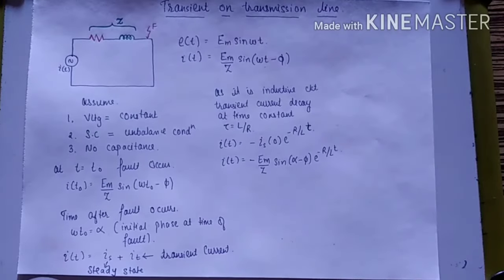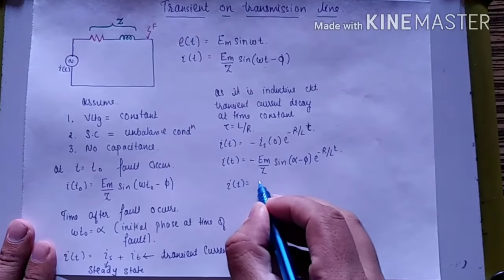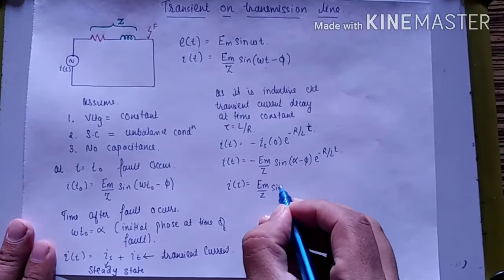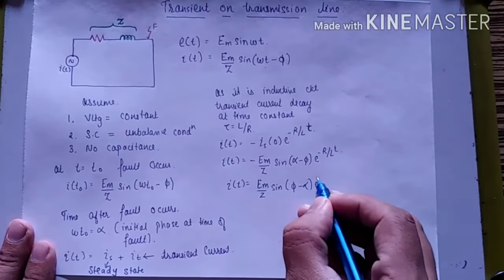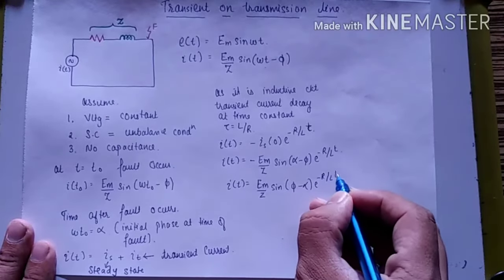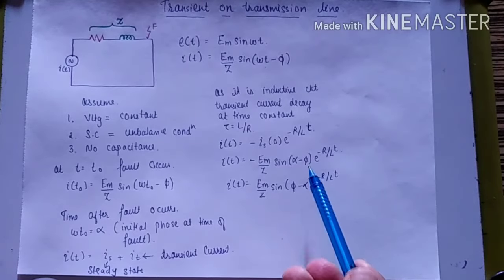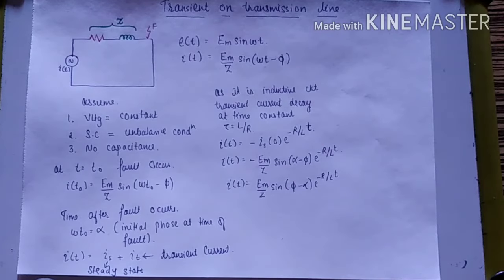This becomes I_t(t) = (Em/Z)·sin(φ − α)·e^(−R/L·t). We have converted the sign by writing φ first and then −α, so the minus becomes positive.